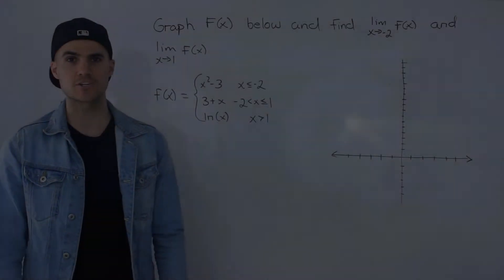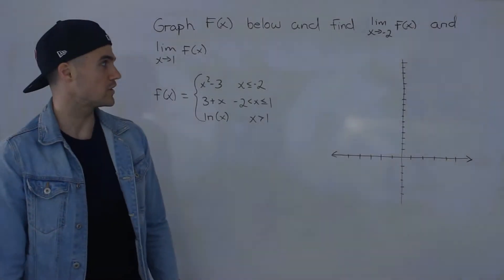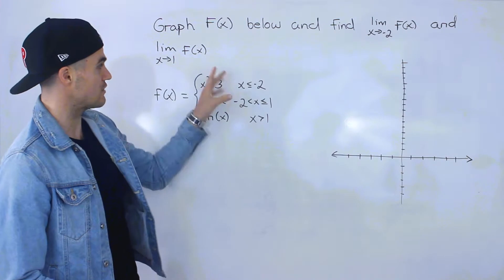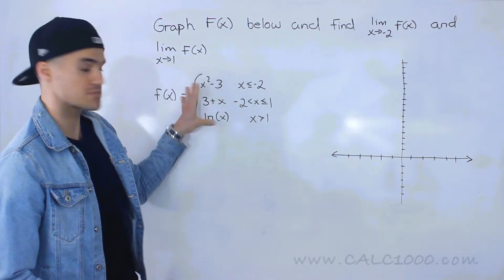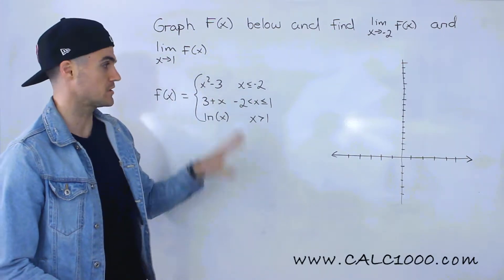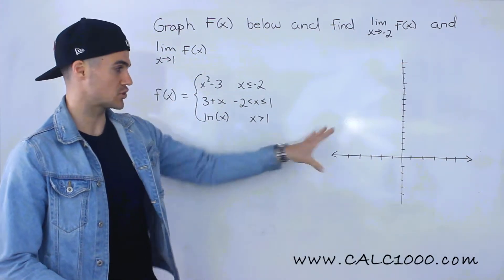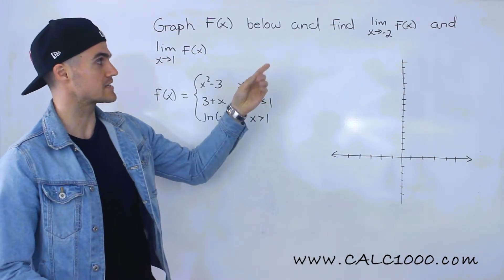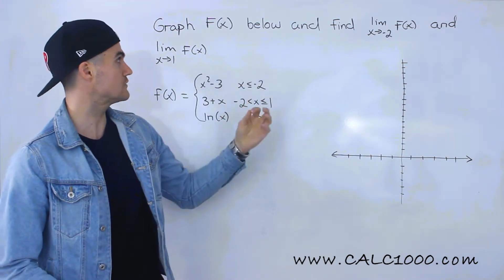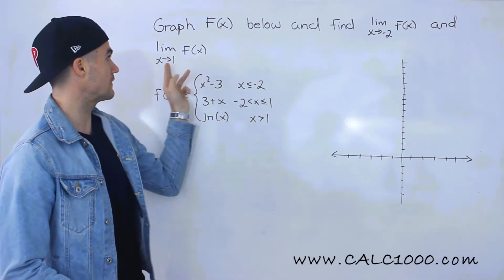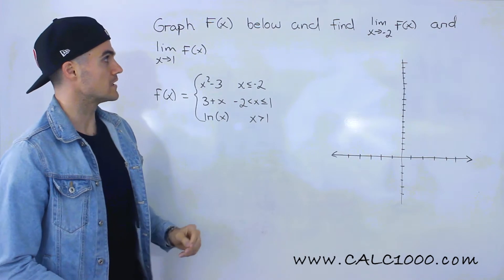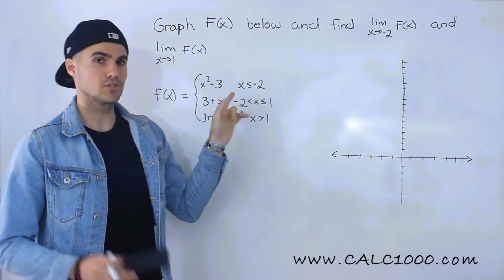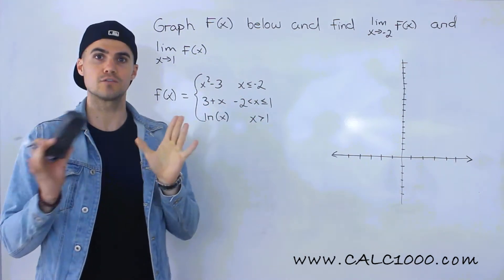Welcome back. Patrick here, moving on to the next example. We have to take this piecewise function, graph it, and then find these two limits: the limit as x approaches negative two, and the limit as x approaches one.